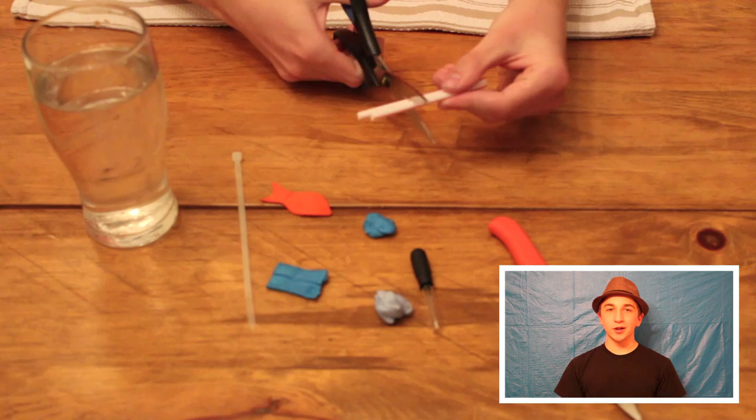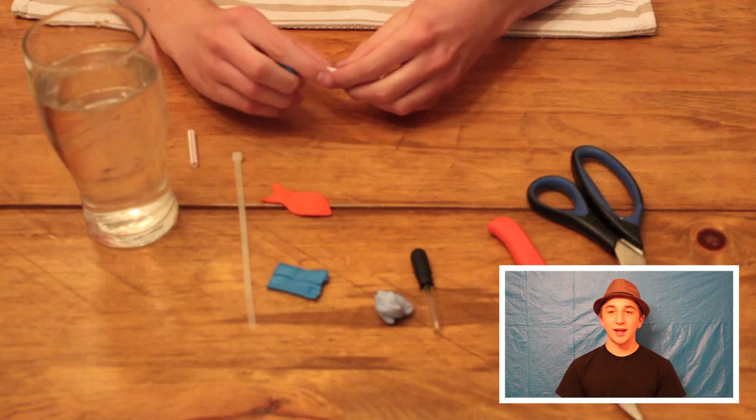Step 2. If you're using a straw, cut it down to 3 inches or 7.5 cm. Bend it in half and then mold the plaster scene onto the open ends. Then push the foam fish into the slot created by the bent straws.